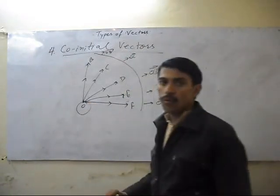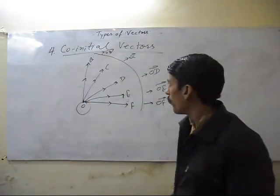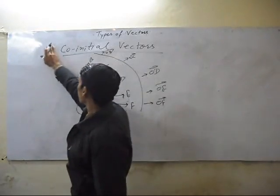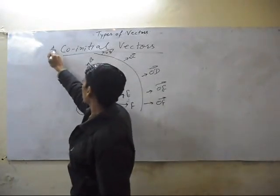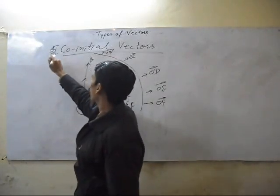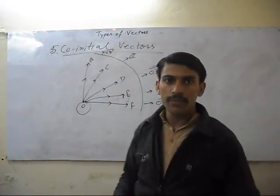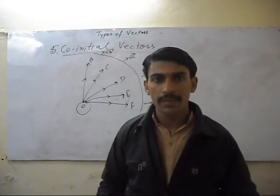So this is the fifth type of vectors. Okay, thank you very much.